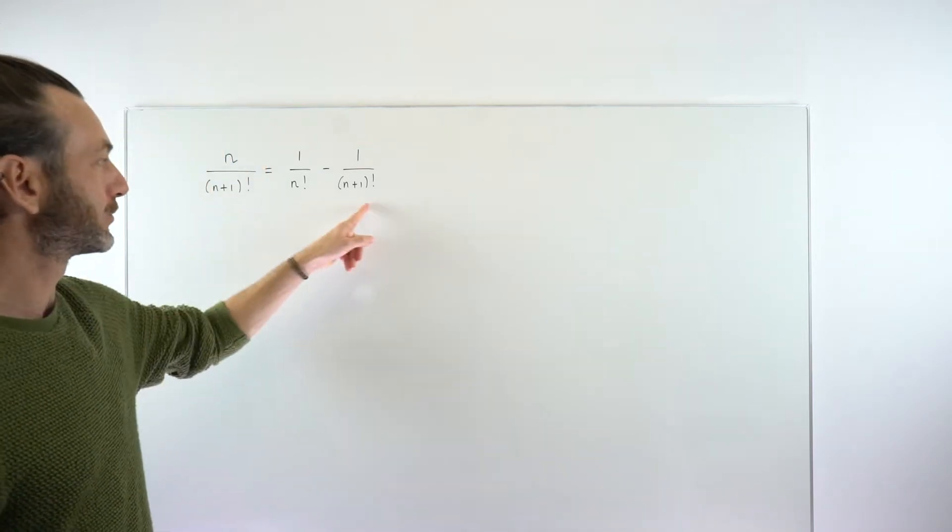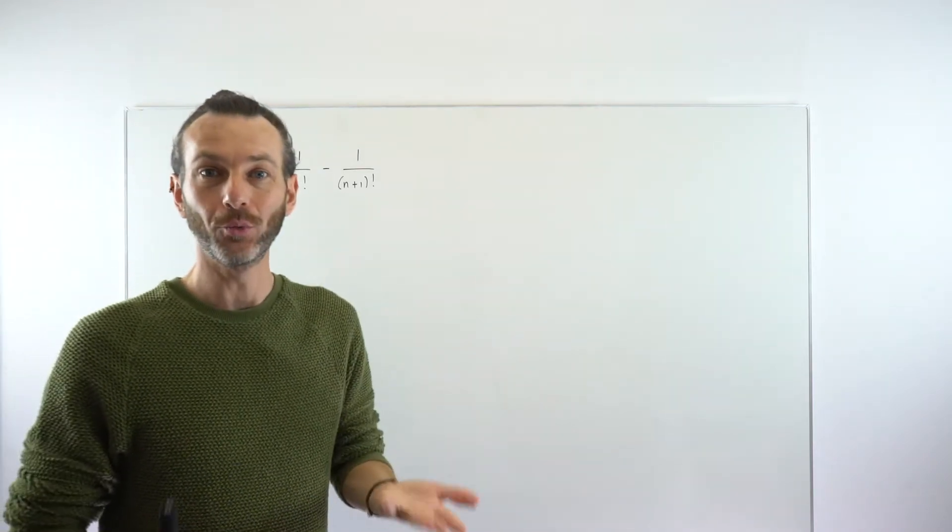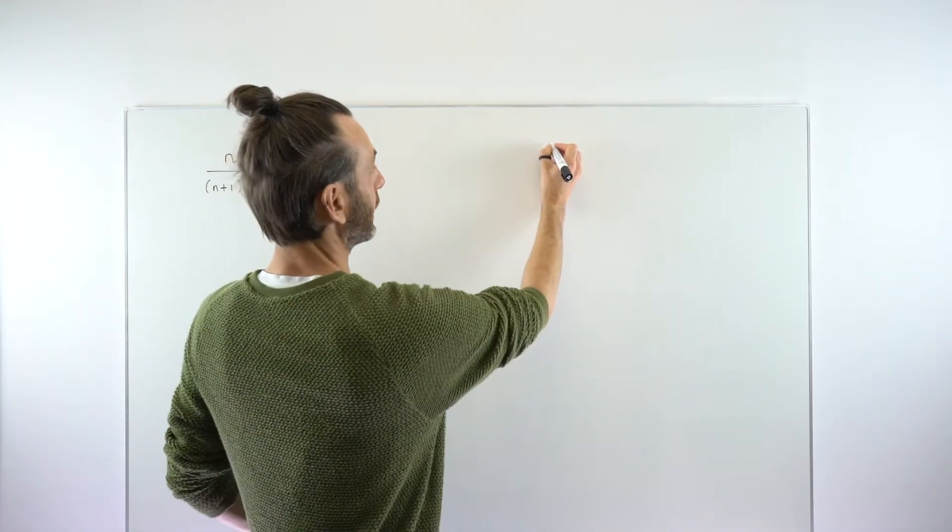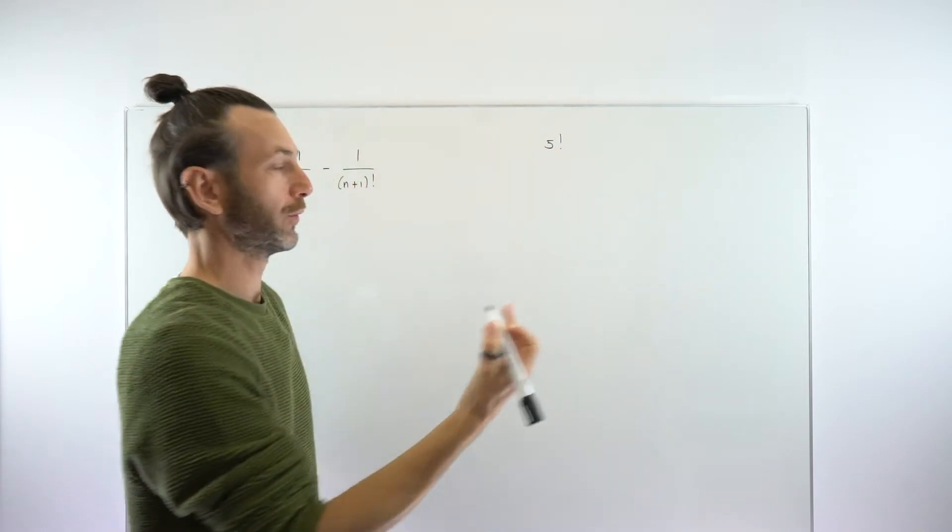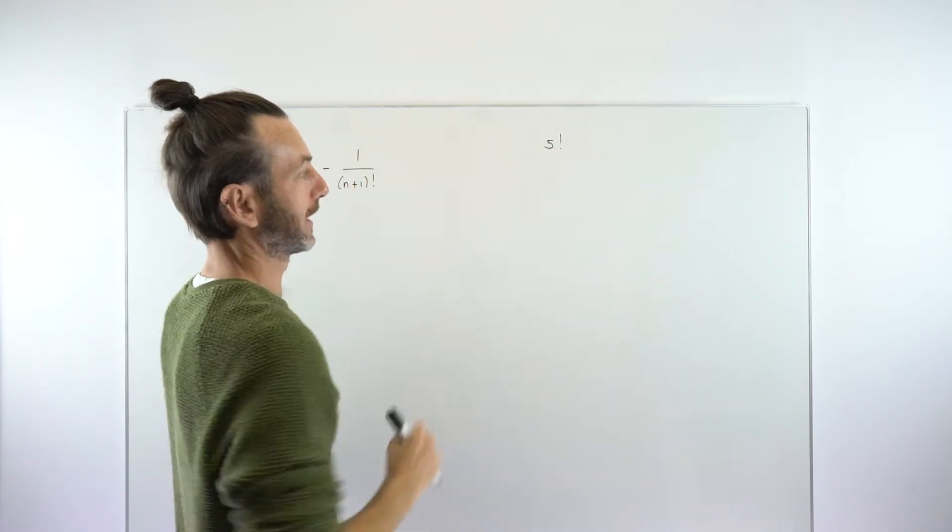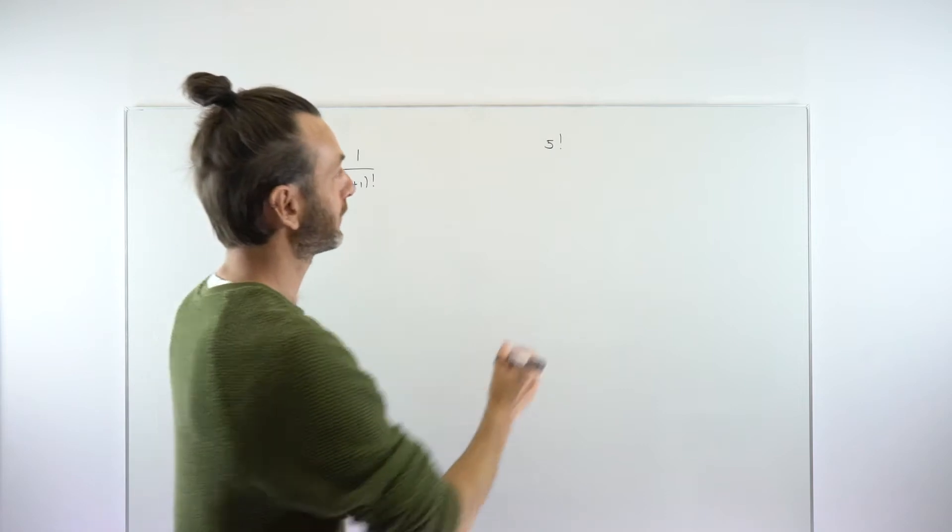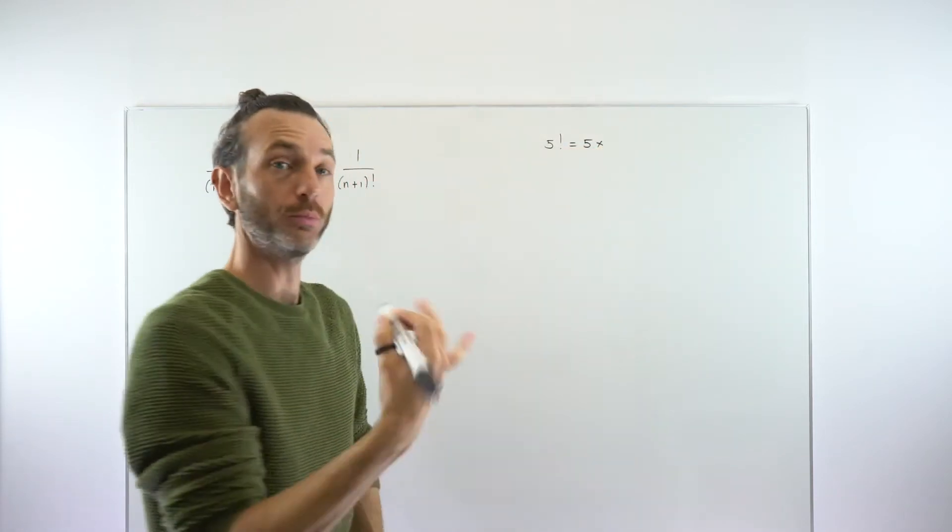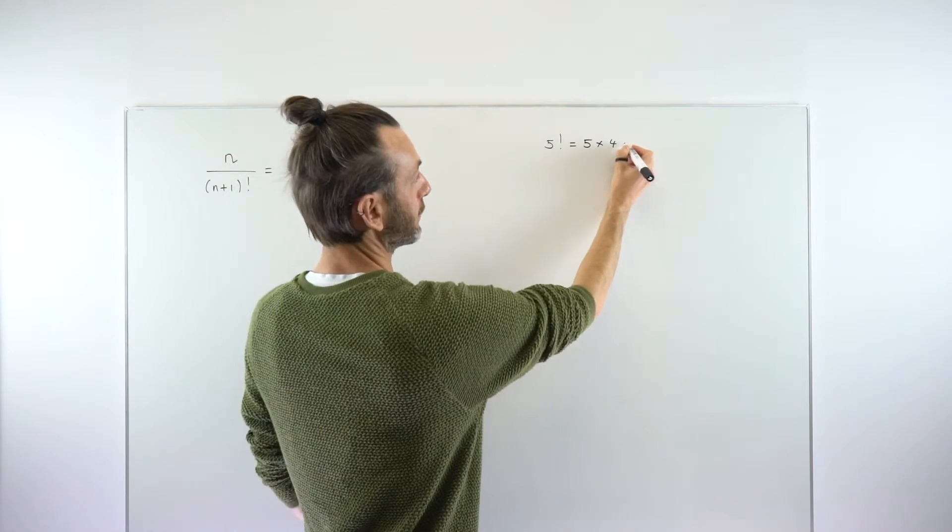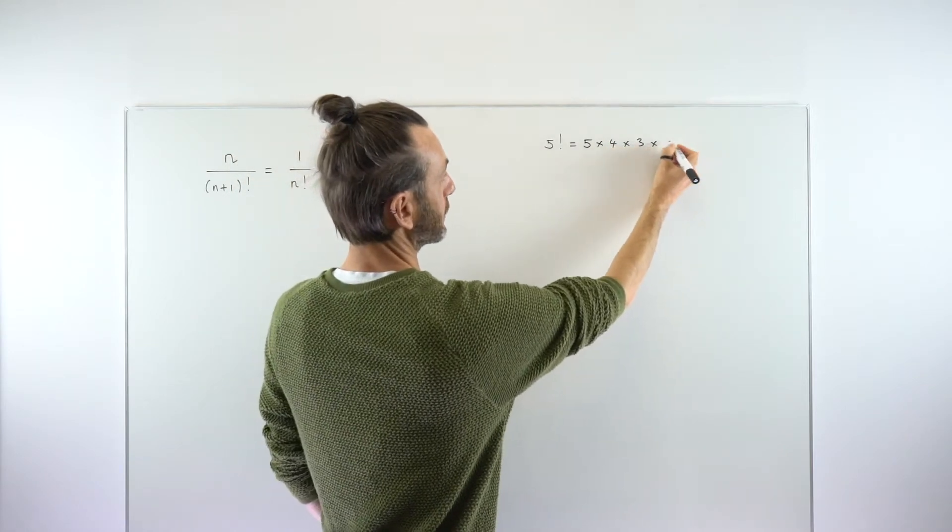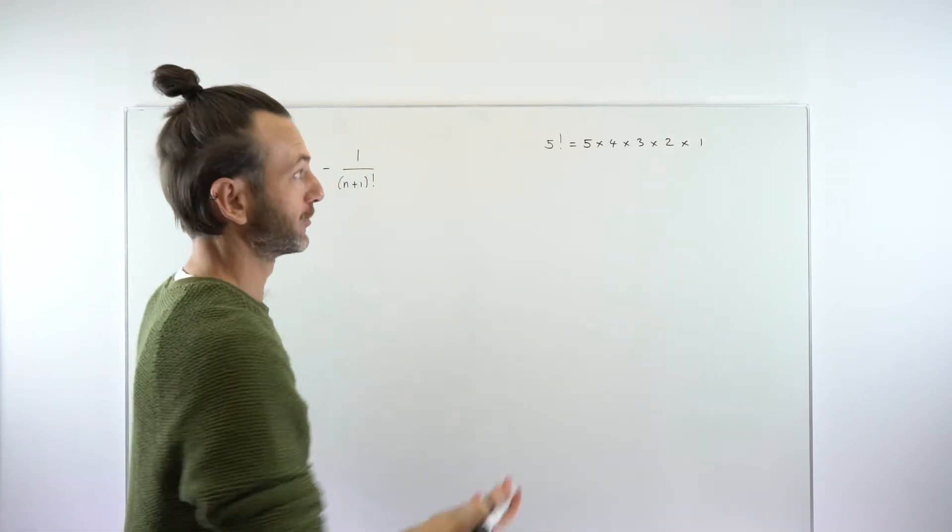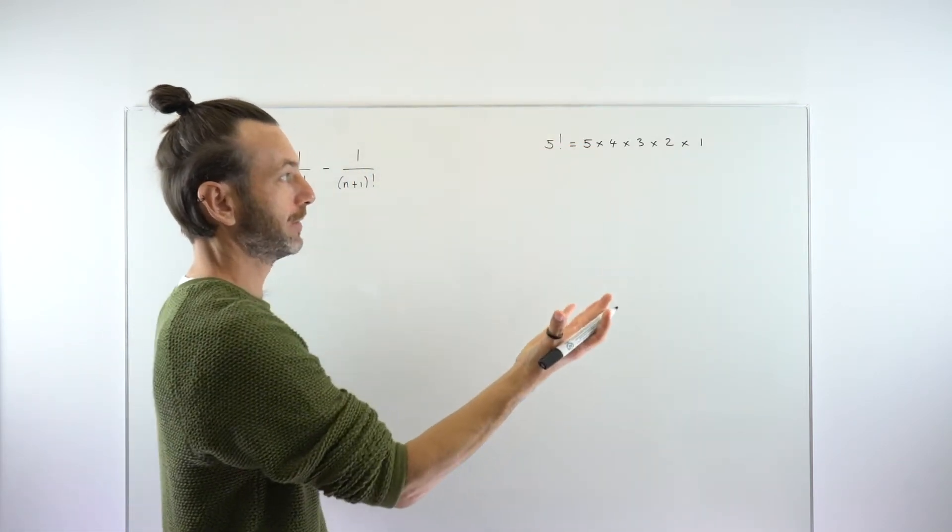So before we get into proving this result, let's just think about what a factorial is. To take a simple example, 5 factorial—if you're new to factorials, first of all, factorials are written with this exclamation mark. And 5 factorial just simply means multiply 5 to all the numbers smaller than 5. So 5 times 4 times 3 times 2 times 1. That's what the factorial notation tells us to do.